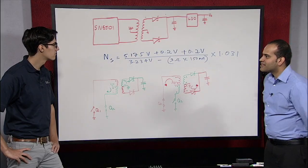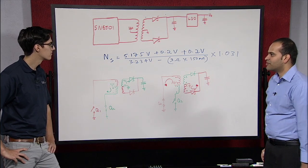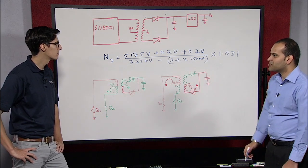So this equation gives us the turns ratio of the transformer. And in this case, it's a 1 is to 2 transformer.